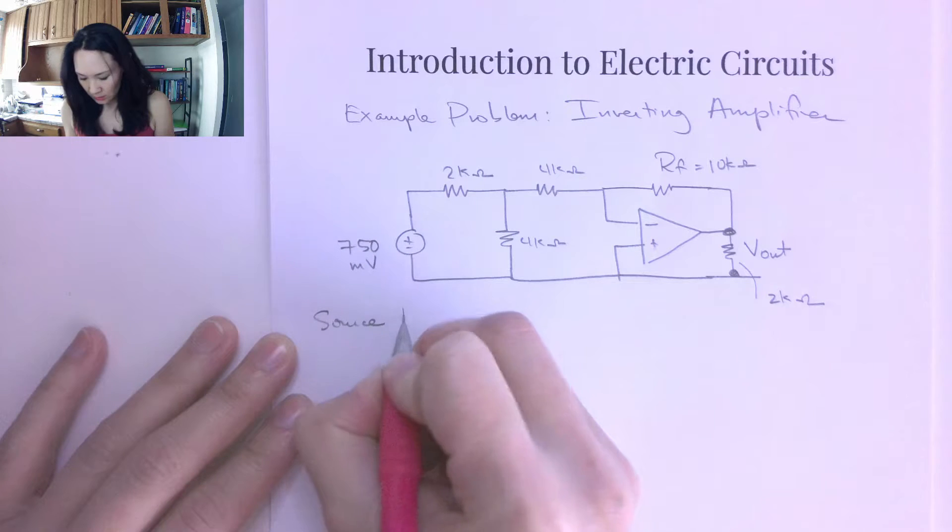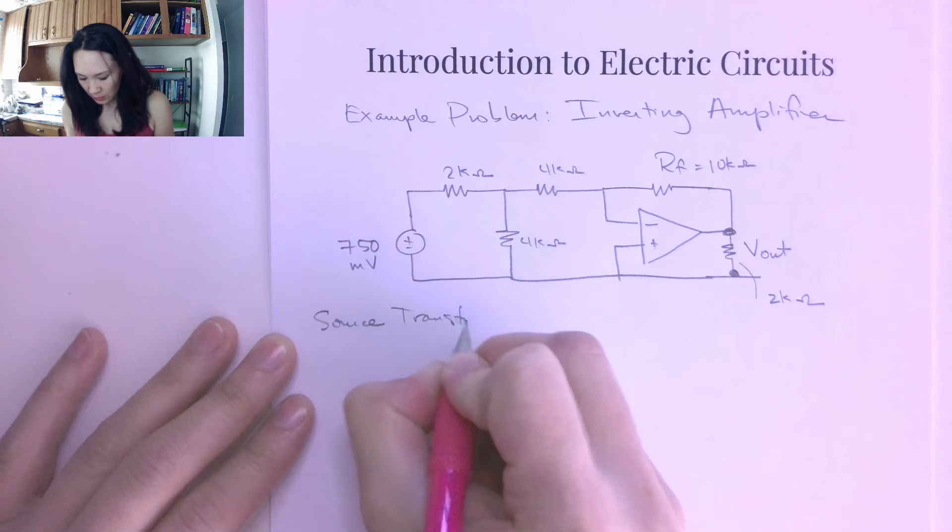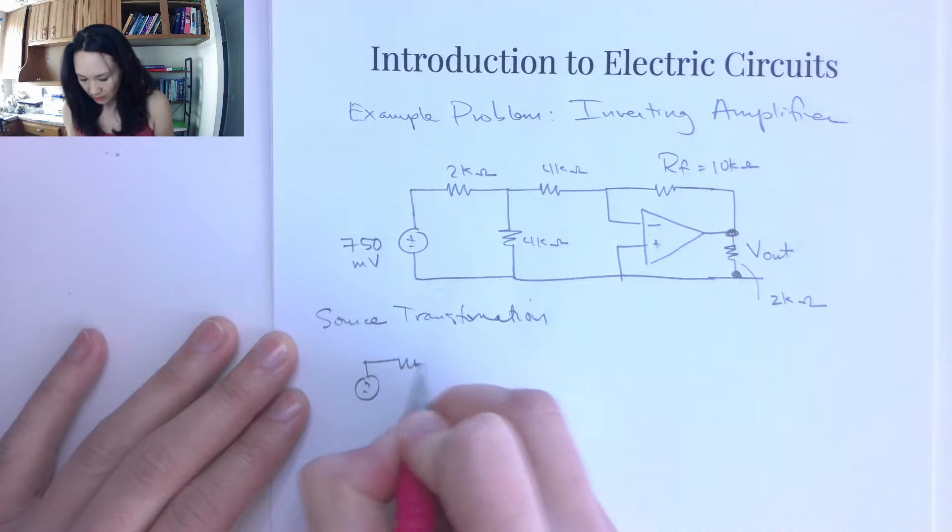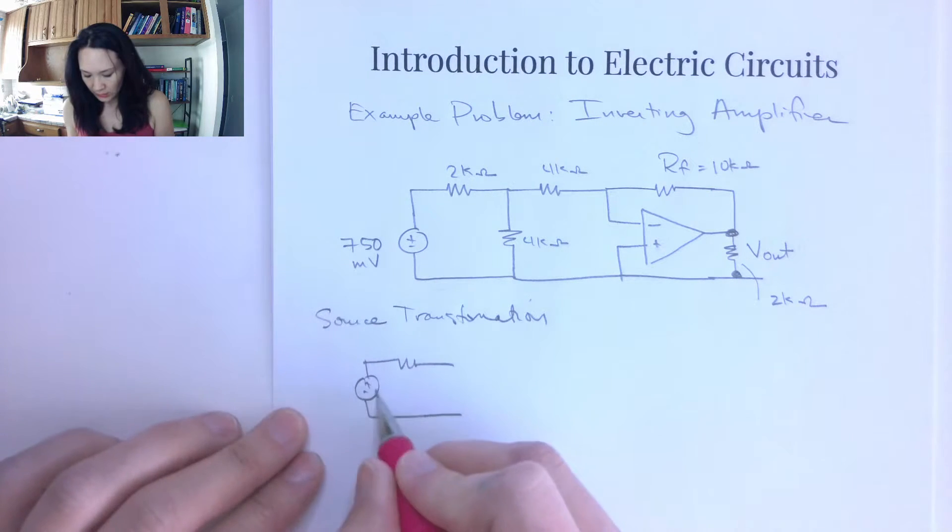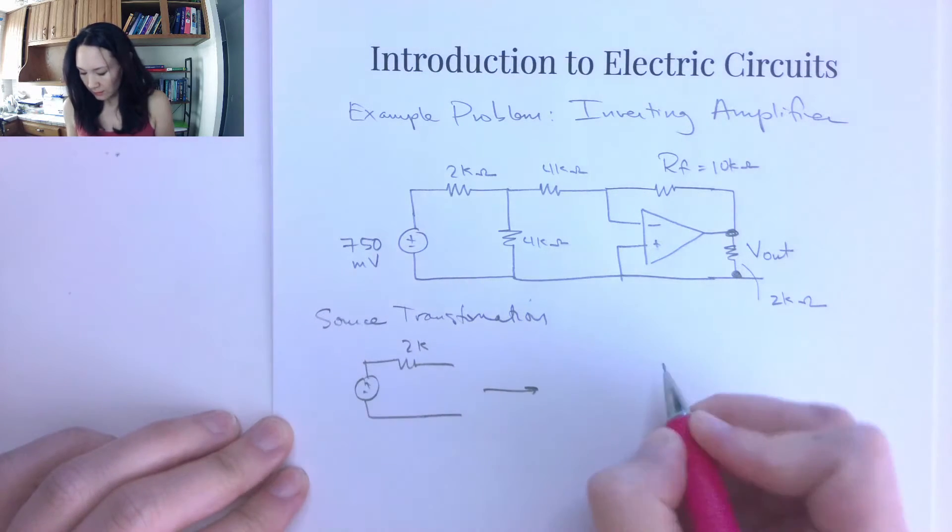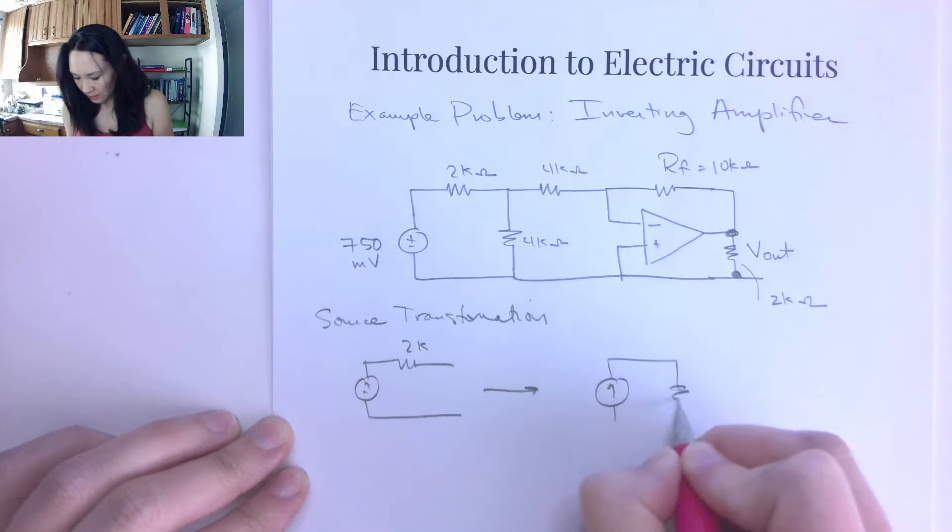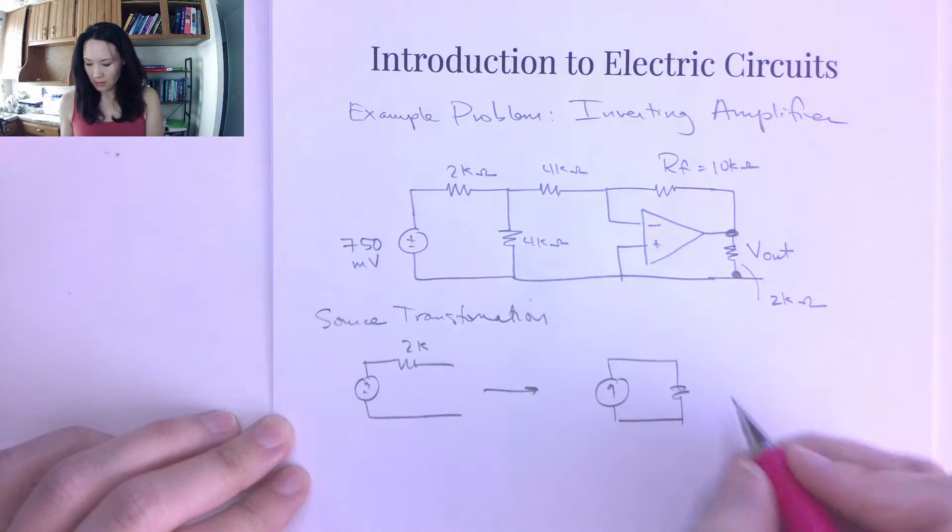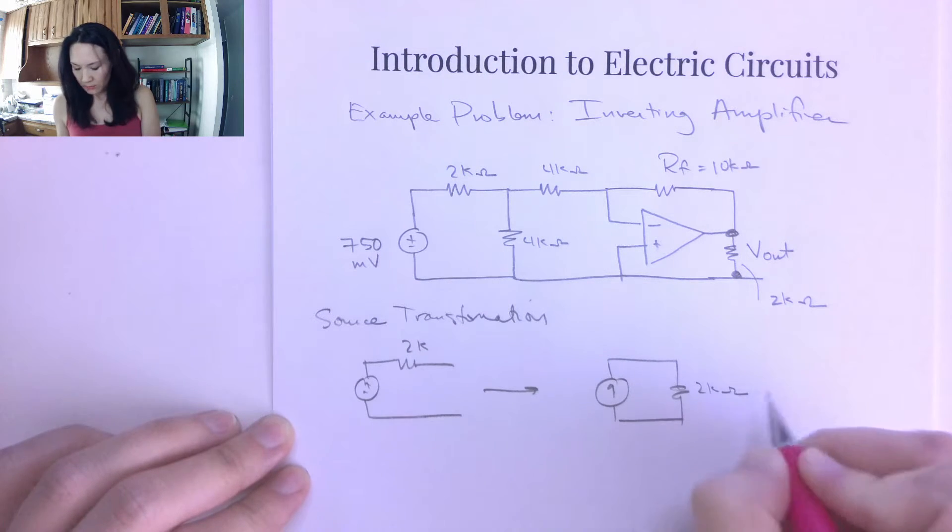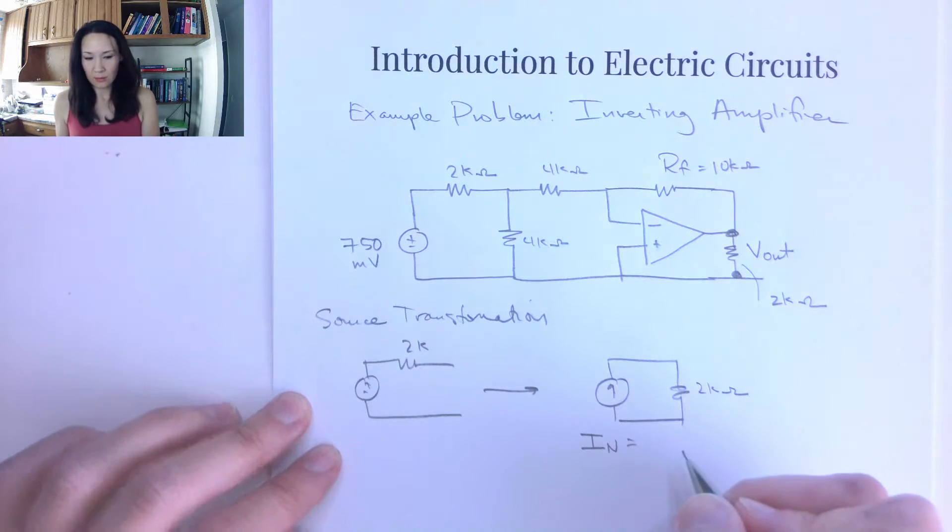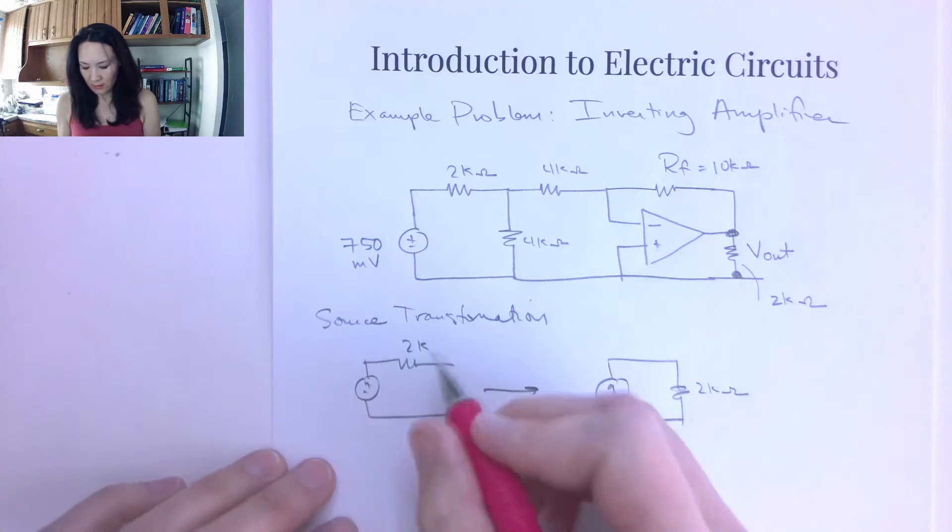So if we use source transformations, I can simplify all this circuitry over here. So I'm going to use a source transformation, and that is I can replace this voltage source in series with a resistor with a current source in parallel with that same resistor. Okay, so if this is 2k ohms, this will also be 2k ohms. But then to calculate this current source equivalent, I'll label this I Norton, since I'm doing the Norton equivalent of this branch of the circuit.